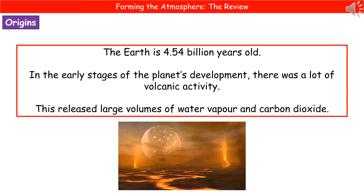The first thing we need to do is go way back into the distant past, to the beginnings of the Earth. We're going back 4.54 billion years, because that's how old the Earth actually is. When we go back to the early stages of our planet's development, what we find is it was a rather inhospitable place. There was loads of volcanic activity, and as a result of that, it was releasing large volumes of water vapor and carbon dioxide, which meant our very early atmosphere was pretty much just carbon dioxide with a bit of water vapor thrown in.